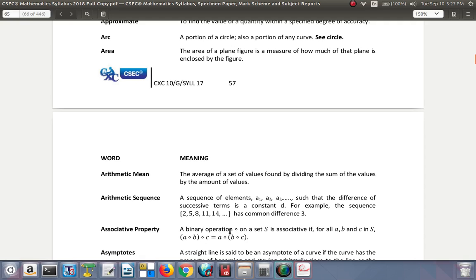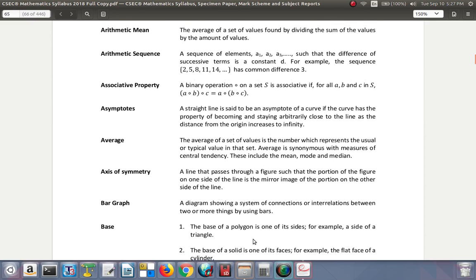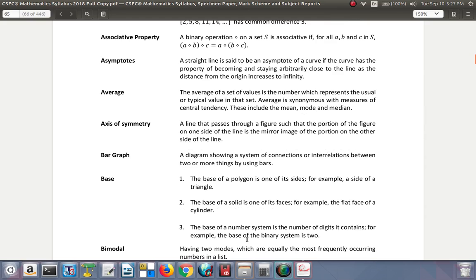Asymptote: a straight line is an asymptote to a curve if the curve has the property of becoming and staying arbitrarily close to the line as the distance from the origin increases to infinity. It gets closer and closer to that line but never touches it. For example, in 1/x, the x-axis is an asymptote.